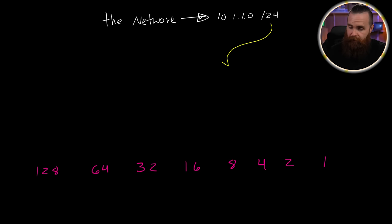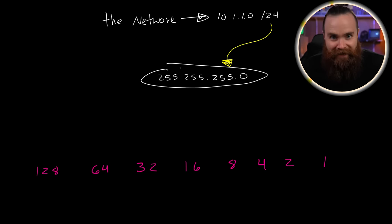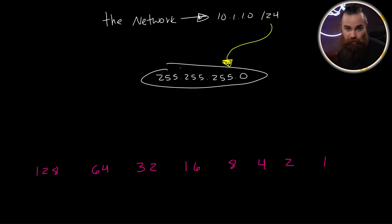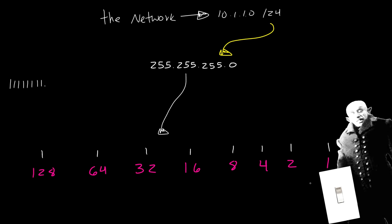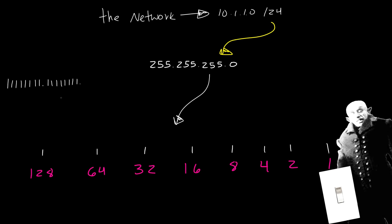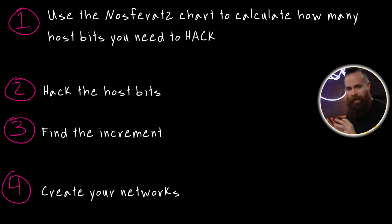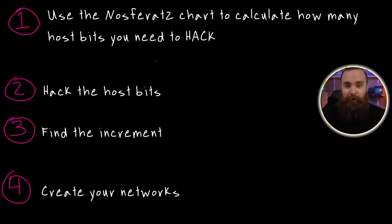Nosferatu, give us our chart. Now subnetting, as you may recall, is all about the subnet mask. Right now our subnet mask is 255.255.255.0 in dotted decimal notation. It's this mask that we're going to manipulate to make our new networks. But before we can do that, we need to convert this thing into binary.